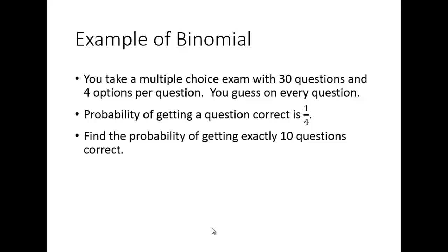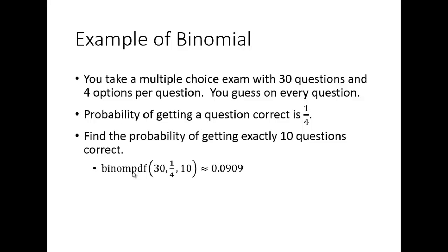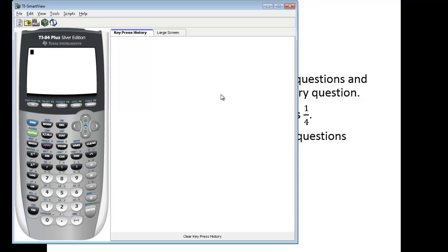We want to find the probability of getting exactly 10 questions correct. We have a binomial distribution with 30 trials, 1/4 probability of success, looking for exactly 10 successes. On the calculator you use binomial PDF, entering 30, 0.25, and 10, which gives approximately 0.0909.